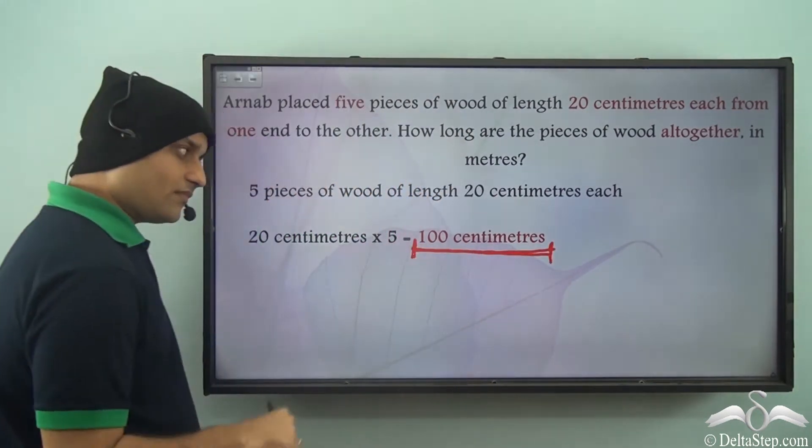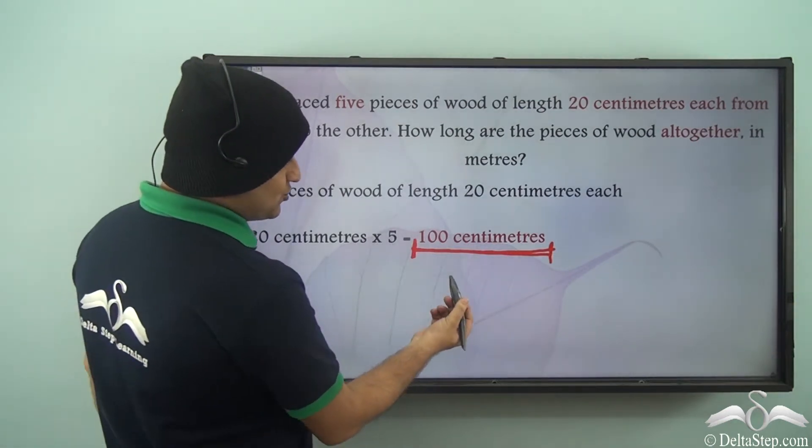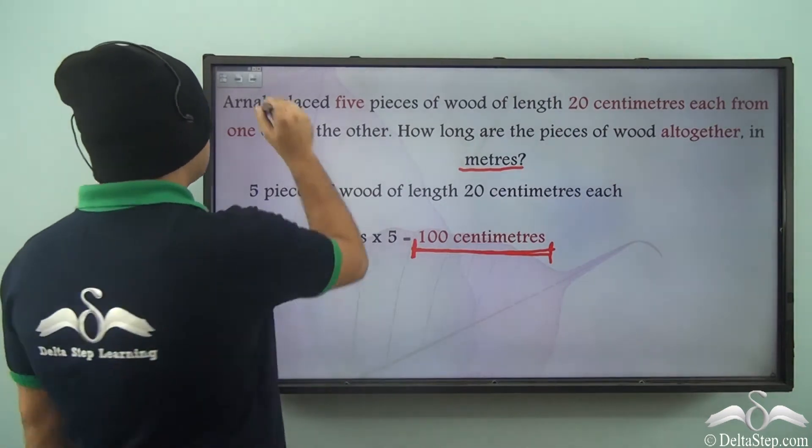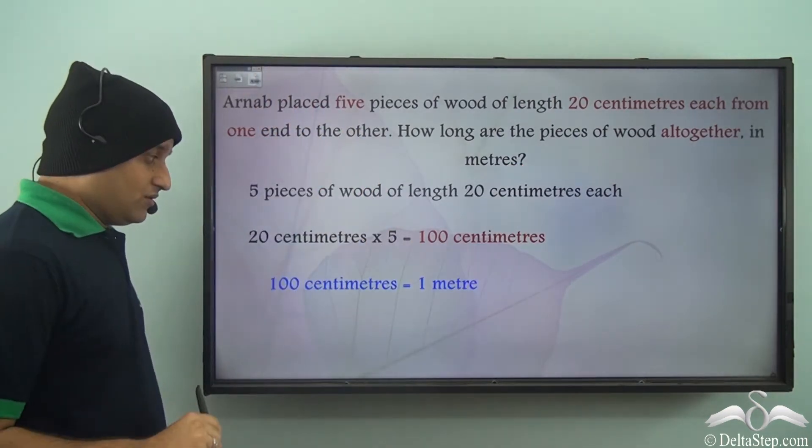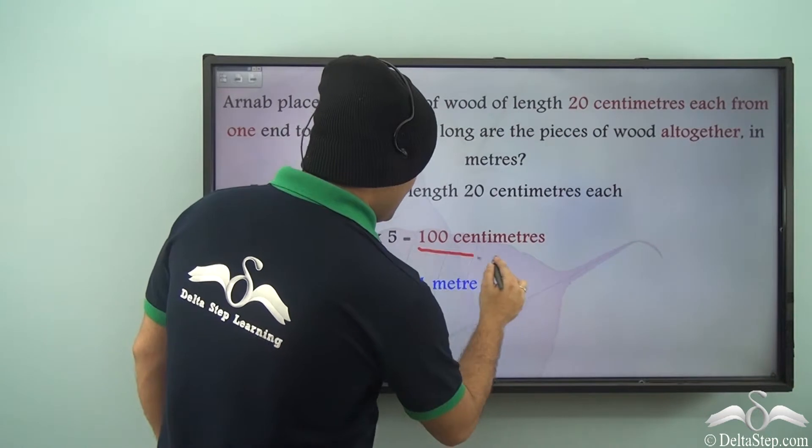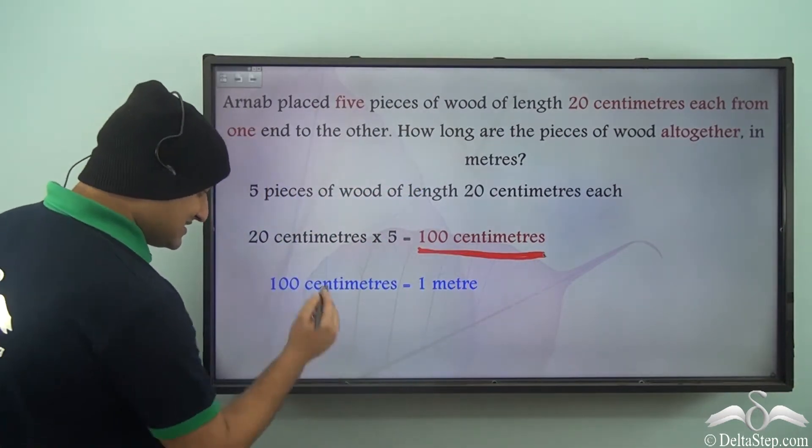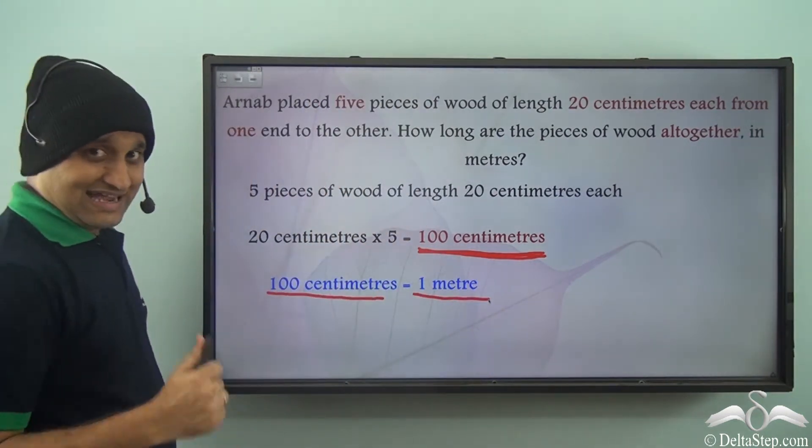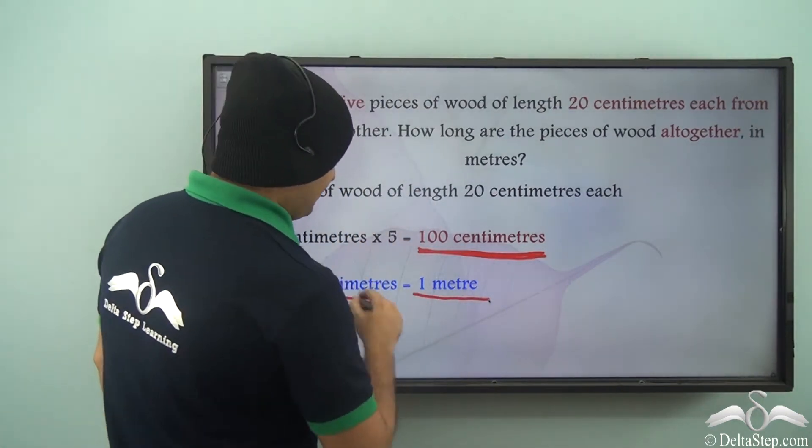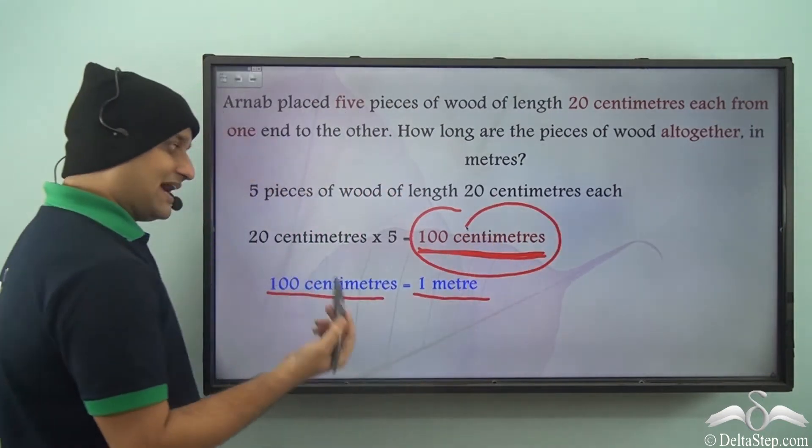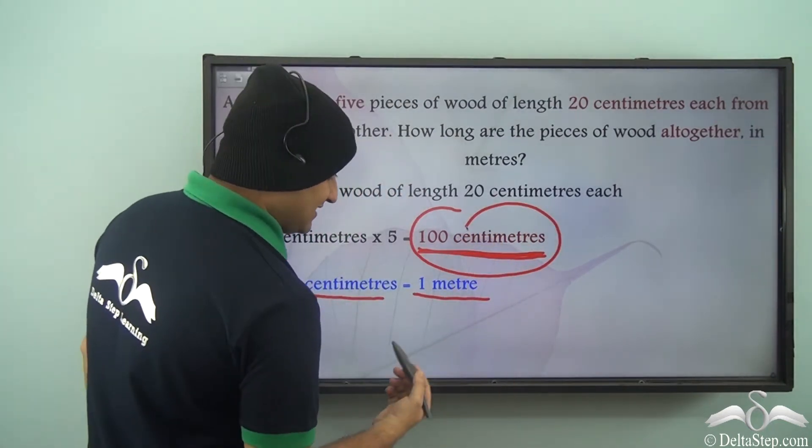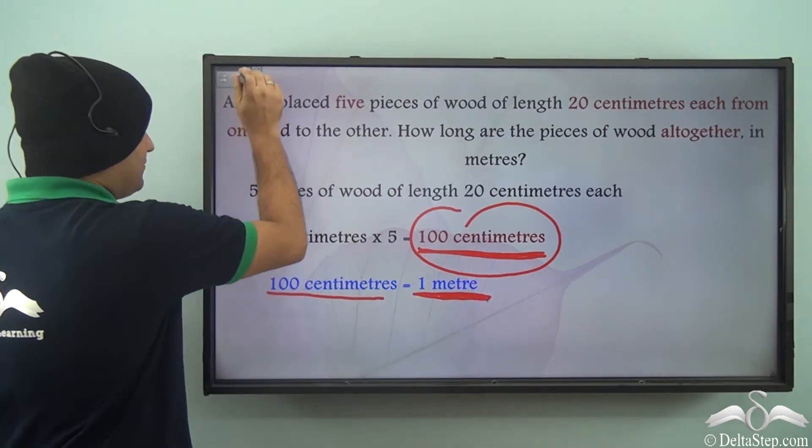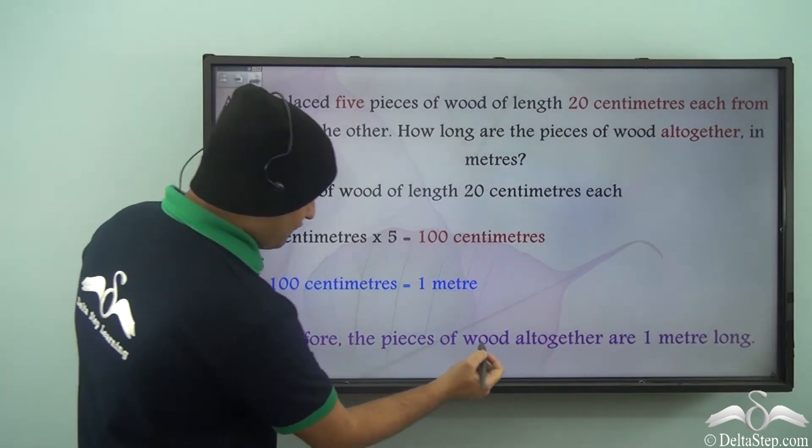Now we need to convert this into meters. The conversion is 100 centimeters is equal to 1 meter. So if the entire length is 100 centimeters, that means the entire length is 1 meter.